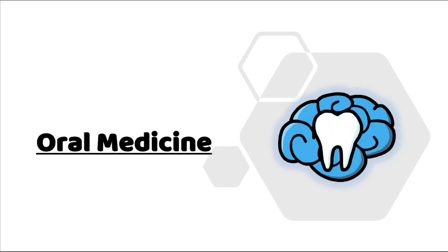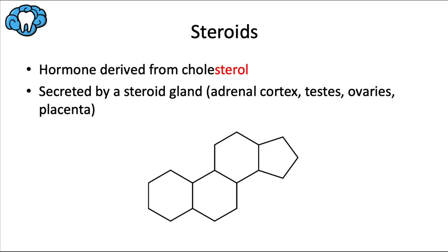Hey everyone, Ryan here and welcome back to our oral medicine series. This video is focusing on steroids and adrenal insufficiency. A steroid is a hormone — a signaling molecule or messenger that travels to other parts of the body. It's derived from cholesterol, a waxy substance. You can see that 'sterol' is related to 'steroid.' This is the steroid core; it contains four aromatic rings labeled A, B, C, and D from left to right, which both cholesterol and all steroids share.